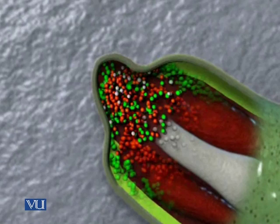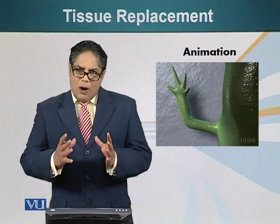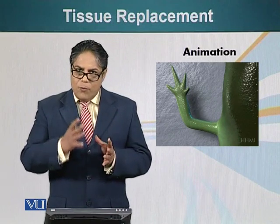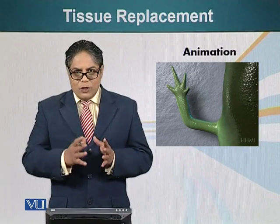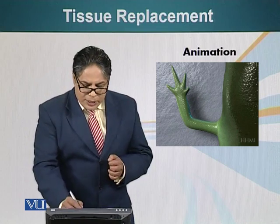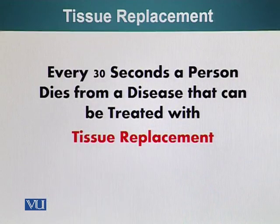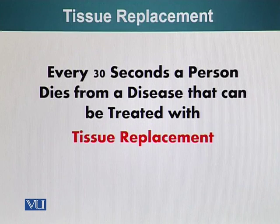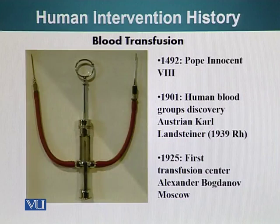So how can we use our information about how animals regenerate — how cells can make more copies of themselves and differentiate — to help people who have lost some part of their tissue? Unfortunately, we cannot regenerate like amphibians and we pay a price for that. Every 30 seconds, a person dies from a disease that can be treated with tissue replacement. So we are going to talk about different strategies people have been developing to overcome the tissue replacement problem.